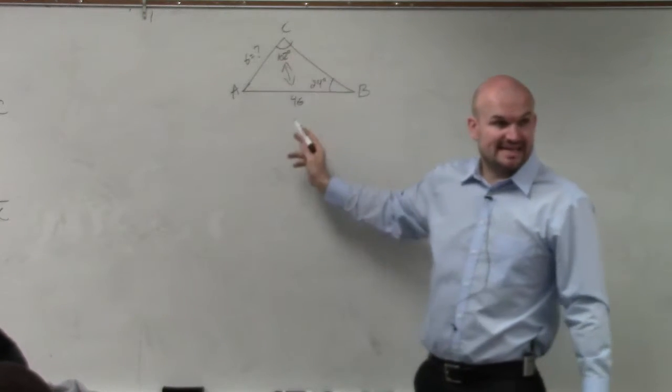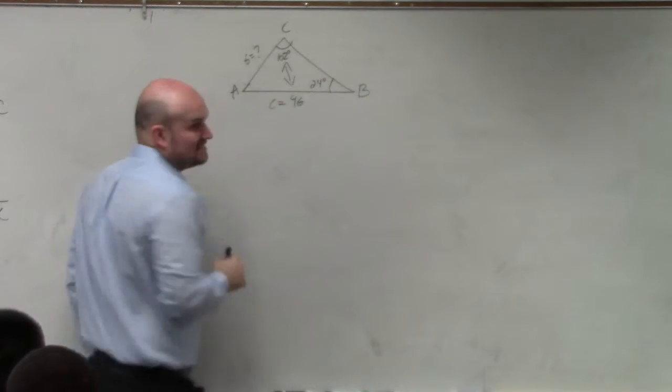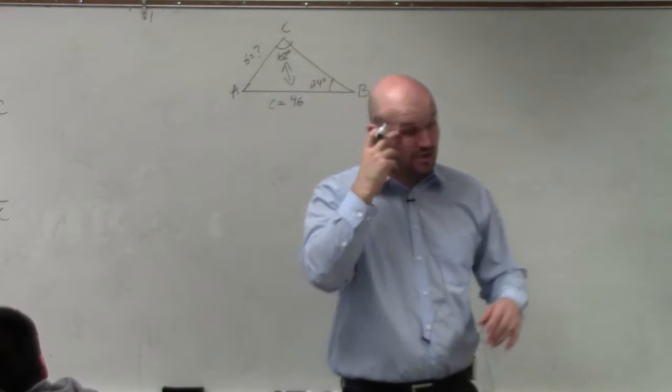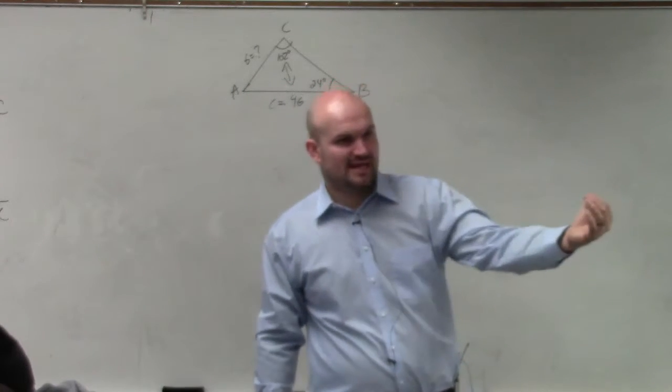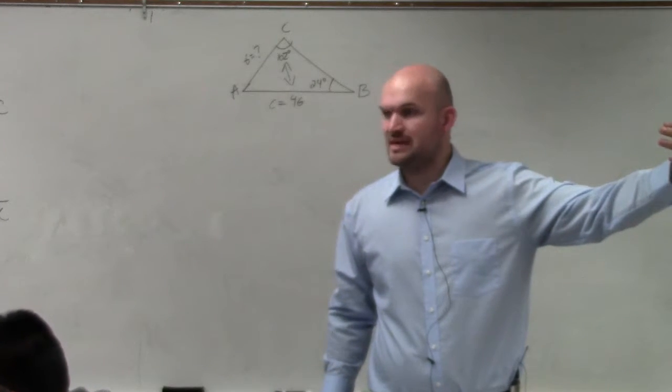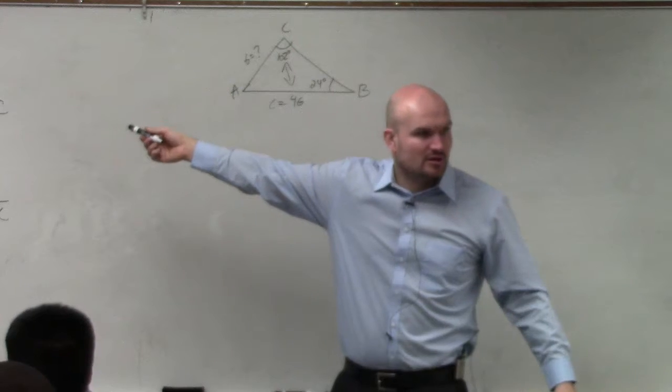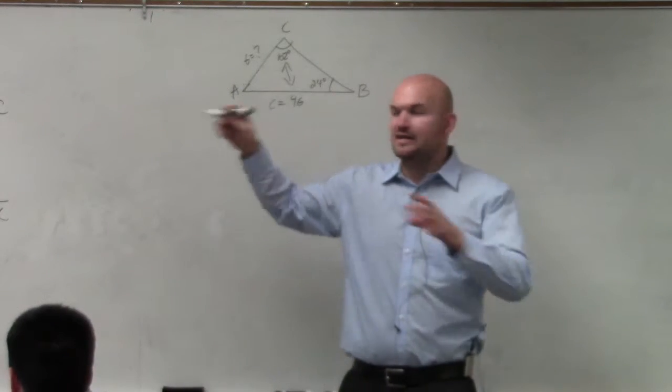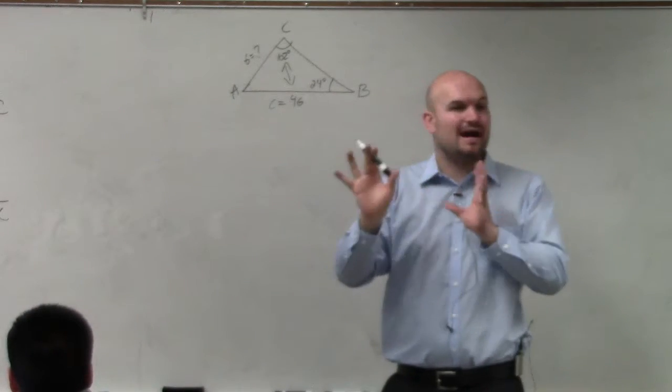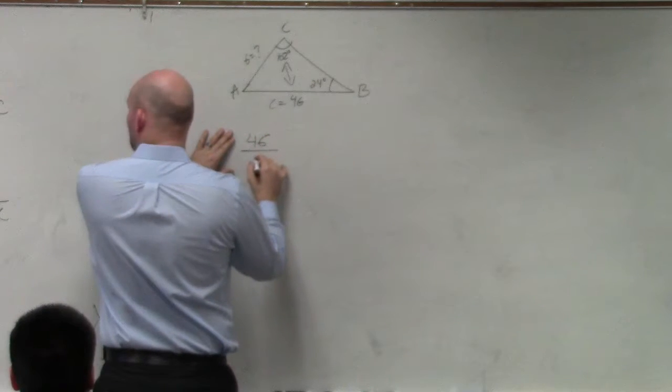Now that is c, so therefore I know that this is going to be, based on my case, lower case c. So the side length, the lower case letter is always directly across from the uppercase letter. Does that make sense? So don't just use that triangle as it has to look like that, or that's where a, b, and c have to be. I wanted to show you that triangle so you see that they're opposites.